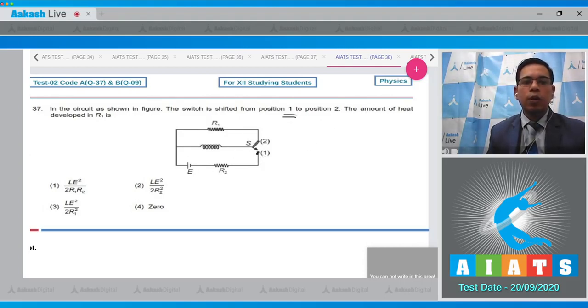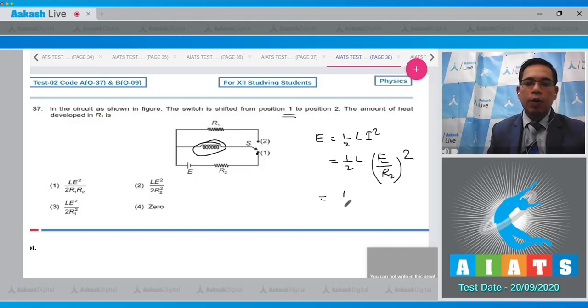When the switch is shifted to position 2, the heat dissipated will be equal to the energy stored in the inductor. Energy stored in the inductor will be equal to 1/2 L I squared, which is 1/2 L into (E/R2) squared. Hence, it will be equal to L E squared divided by 2 R2 squared. Therefore, option H, the second option, will be the correct answer.